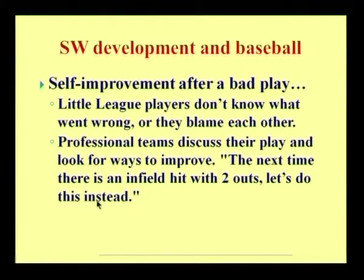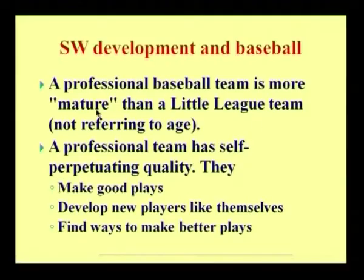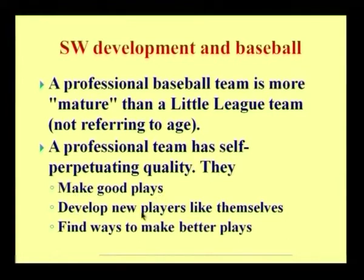Whenever it happens in a little league team, they blame each other. Whereas when the same happens with a professional team, they try to analyze where it went wrong and sort it out the next time. A professional baseball team is more mature than a little league team — not referring in terms of age. A professional team has self-perpetuating quality by which they make good plays, develop new players like themselves, and find ways to make better plays.